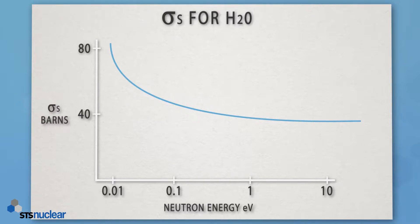What we can say is that for a high-energy neutron somewhere out here, that target nucleus — or our moon — is only exposing a small portion of its area. Our neutron is only seeing that much of the nucleus, and that means the probability of this reaction occurring — this scattering collision — is low.